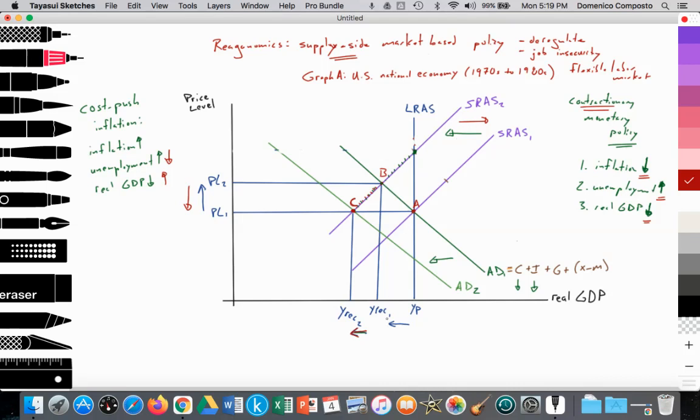In the short run, SRAS 2 was shifting out to SRAS 1 from point B to point A. So eventually you saw an increase in real GDP from Y recession 1 to YP, increasing employment in the economy. Labor costs came down, wages came down, became cheaper for firms to employ labor at lower wages. And eventually the economy was back at full potential at a lower price level.